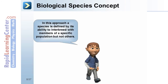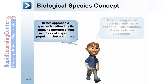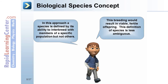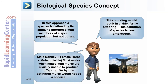In the biological species concept, a species is defined by its ability to interbreed with members of a specific population, but not others. This breeding would result in viable, fertile offspring, making this definition less ambiguous. For example, a male donkey plus a female horse yields a mule, which is infertile. Most mules, when mated with mules, are usually unable to produce offspring. So, by this definition, mules would not be a species.